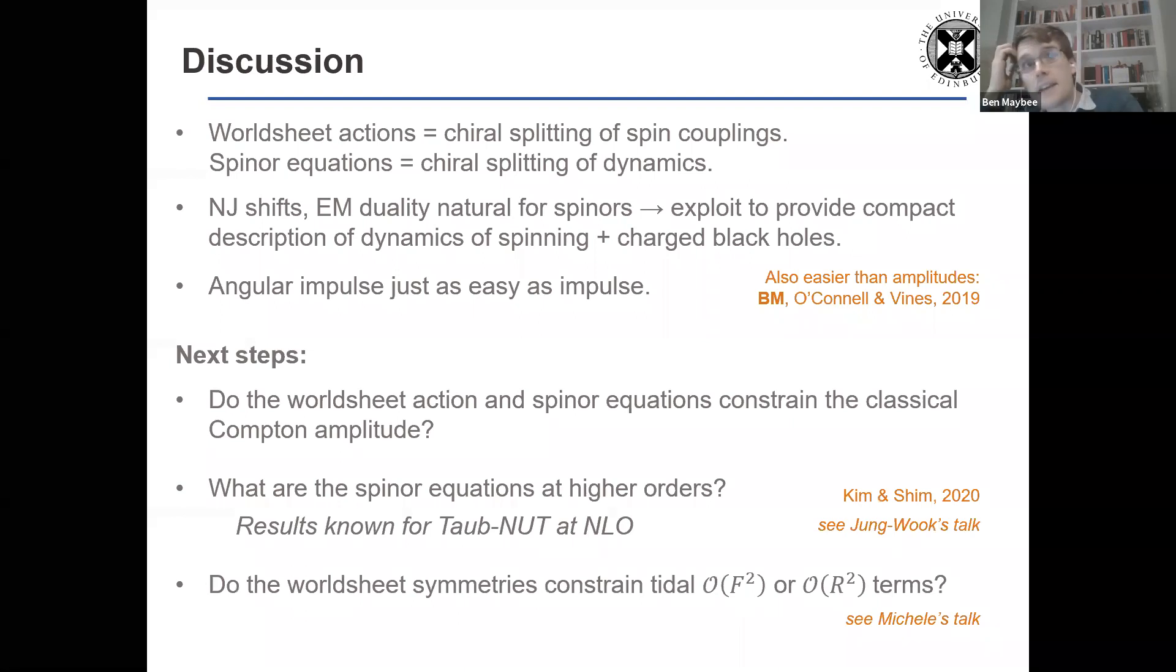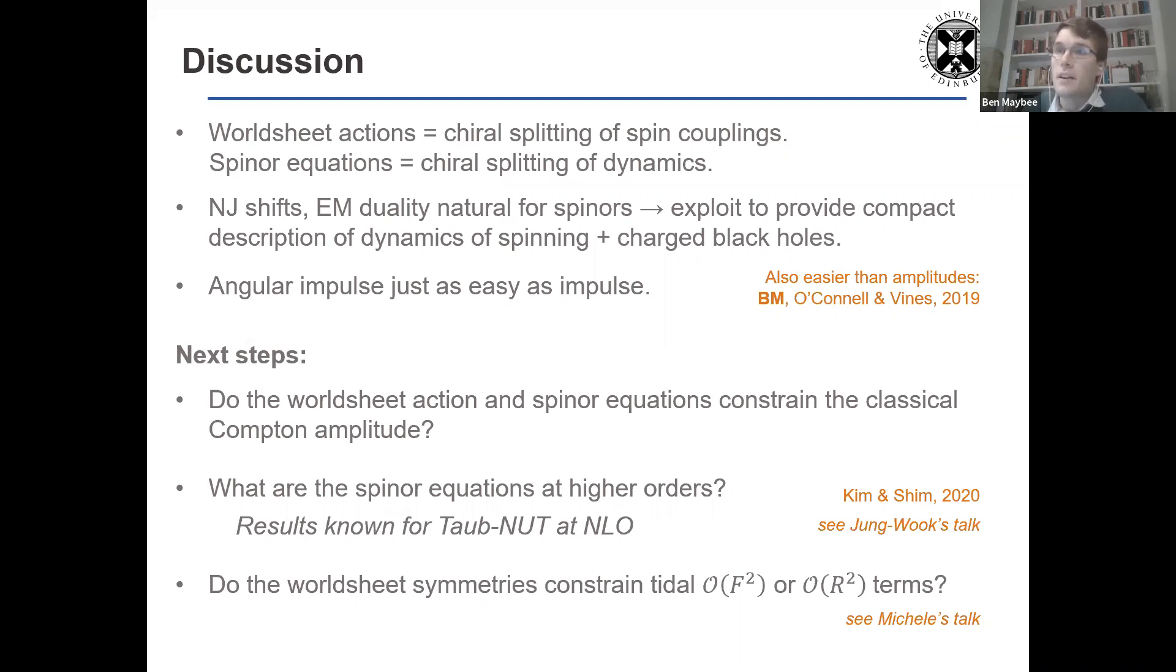In terms of next steps, again, Donal highlighted that all the ingredients are there apart from the order F squared terms to maybe look at constraining the classical content amplitude. This becomes an even more natural thing to do. Now we have spinors and different unique encodings of the different helicities. But to do that, we need to know what the spinor equations are at higher orders.